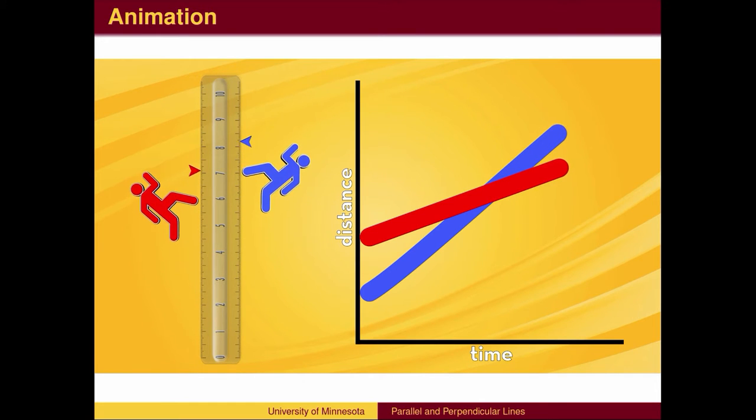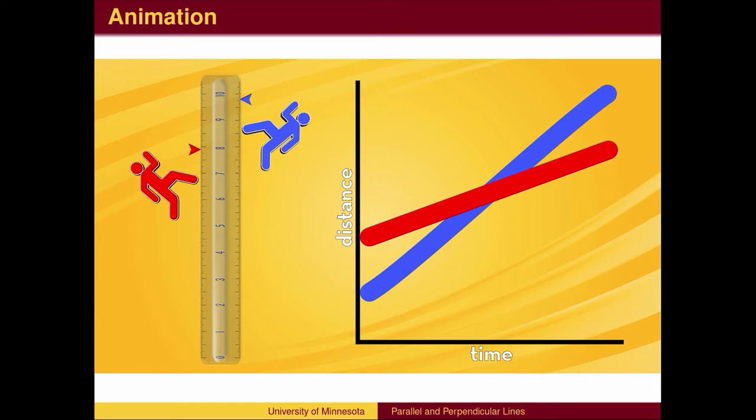that is if the blue competitor runs faster than the red competitor, the blue competitor will catch up. This is equivalent to the lines intersecting.